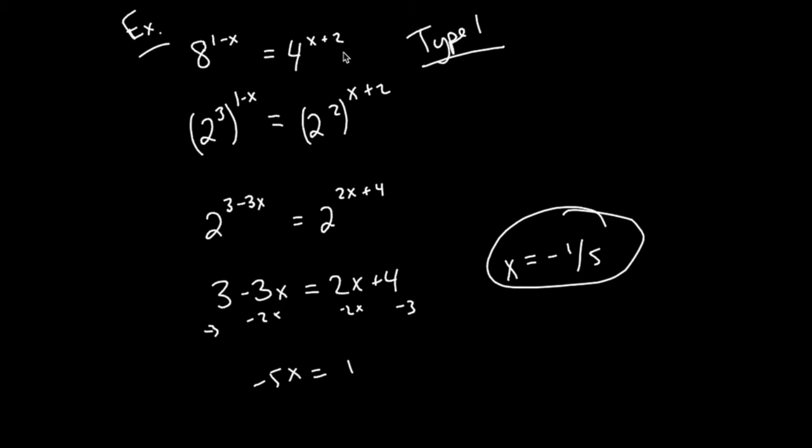I want to do another one real quick, just with a couple more properties of exponents. So example 2: let's say I have 3 to the x plus 1 times 1 over 9 is equal to 27 to the x.